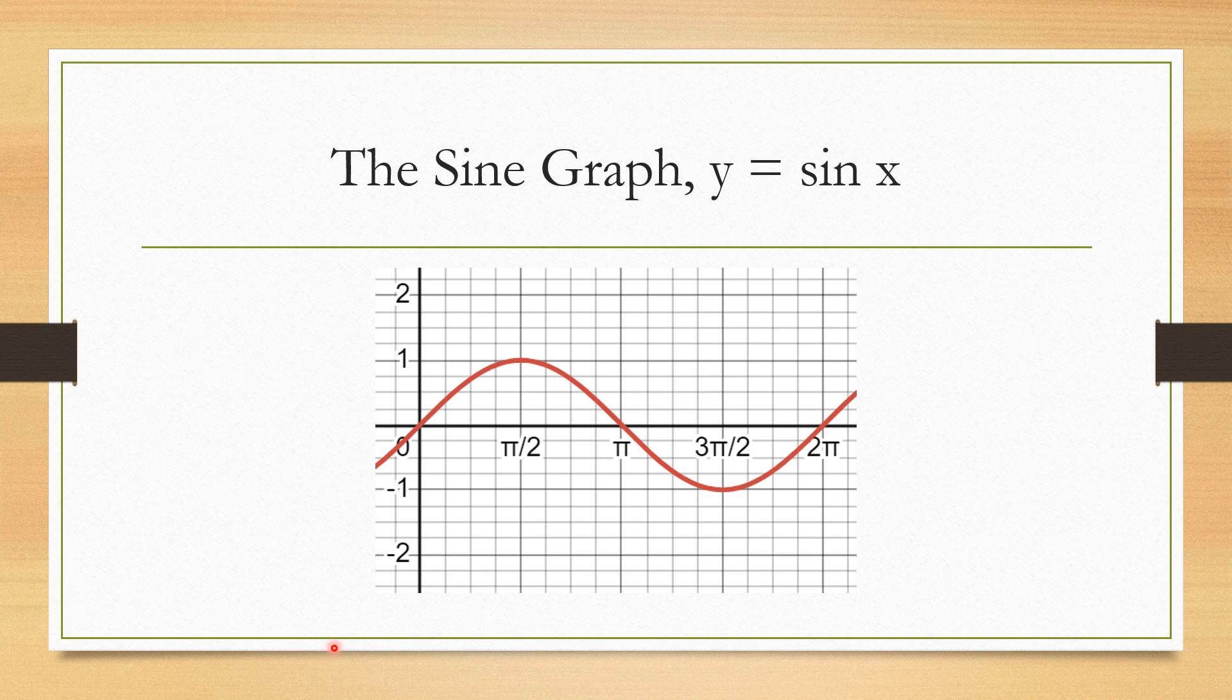There's some specific points, values I want to highlight. So we call the amplitude the distance from the middle line of a graph to the peak, top or bottom. You can see in the regular sine graph the amplitude is 1, as in the distance from the midline, 0 to 1 is 1.